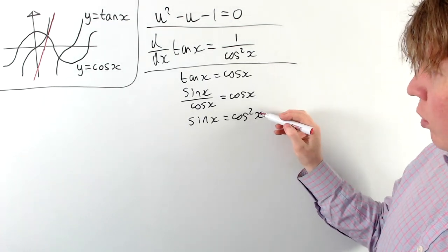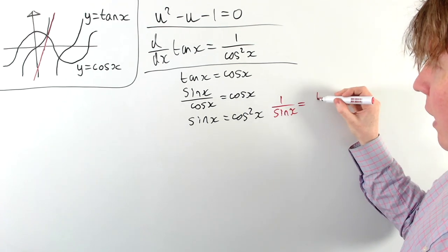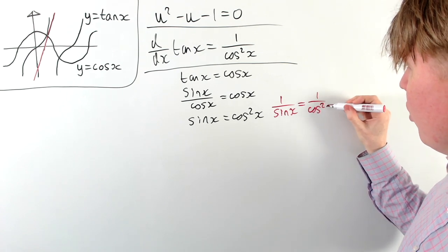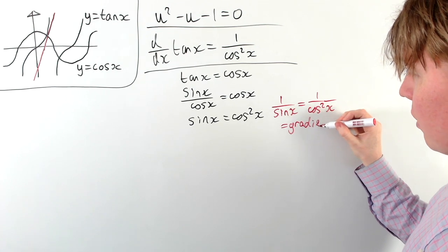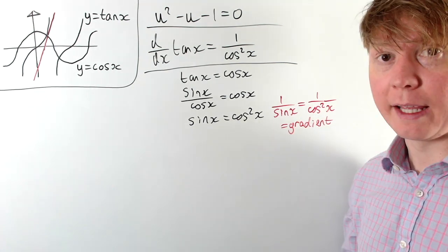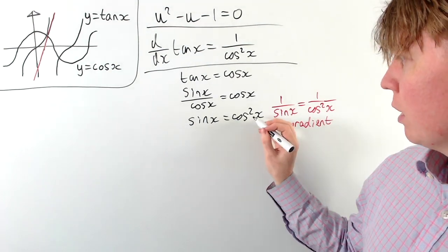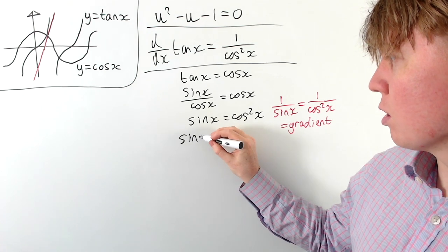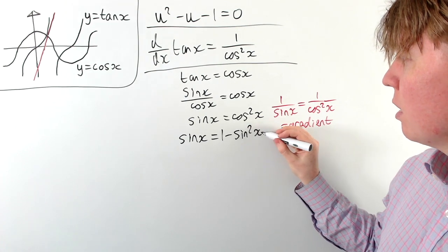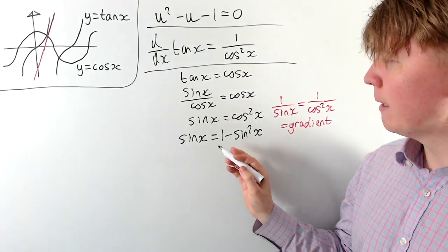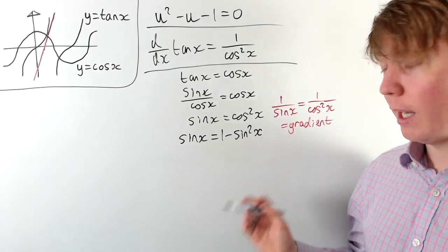At this point we notice that the gradient is 1 over cos squared x. We know that 1 over cos squared x is actually equal to 1 over sin x at the point where they intersect — so 1 over sin x equals the gradient of y equals tan x at that point. To find the gradient, we just need to find 1 over sin x; we don't even need to find the value of x.